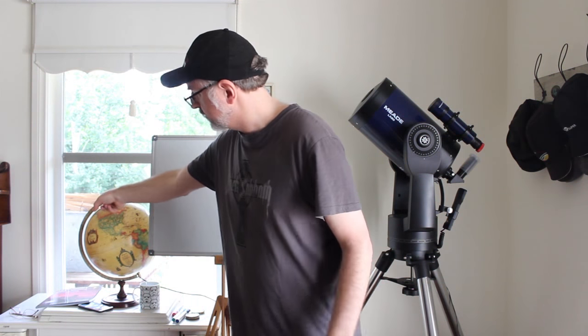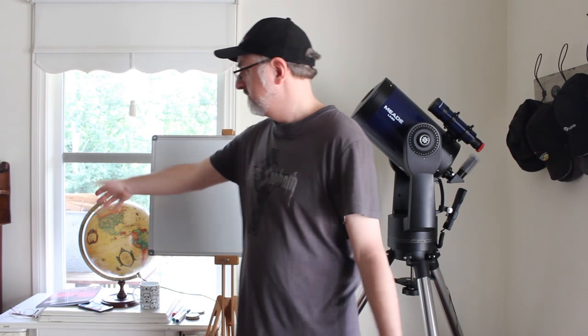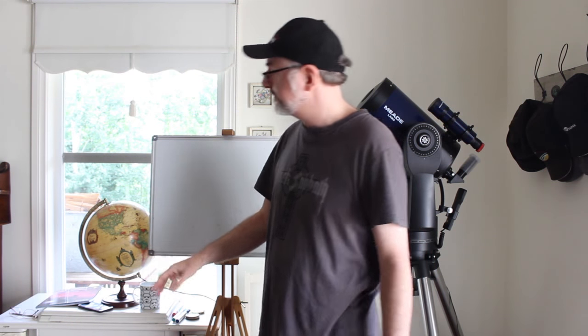The math and the alignment of the telescope only work on a spherical Earth model. There's no math that works on a flat earth model or on a differently shaped earth model. Here's why. Listen carefully.